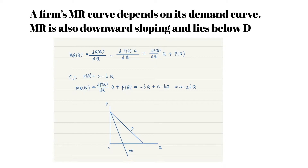The second term, P, is the price or the average revenue. And the first term is the slope of the demand curve times the quantity sold. The slope is negative, so the marginal revenue is lower than the price. That is, a monopoly's marginal revenue curve lies below its inverse demand curve at any positive quantity.